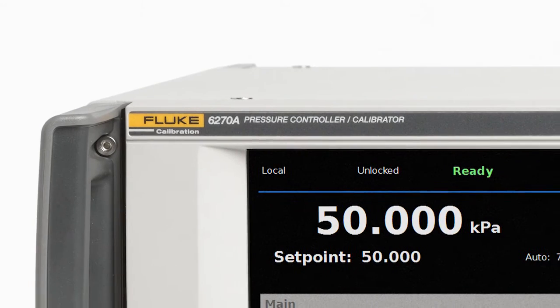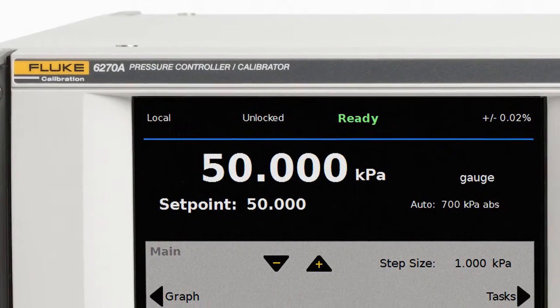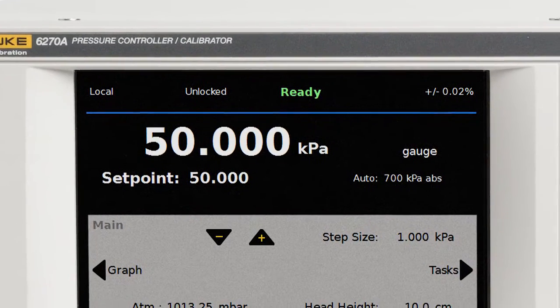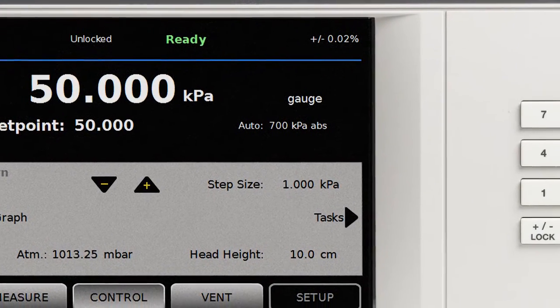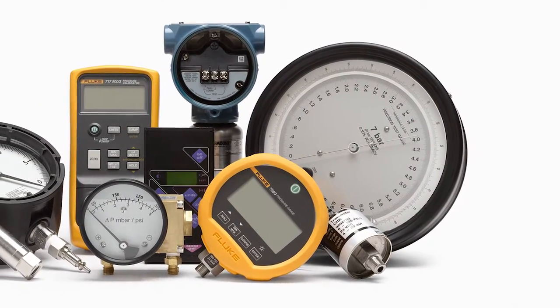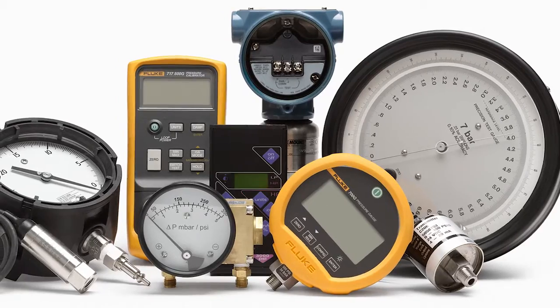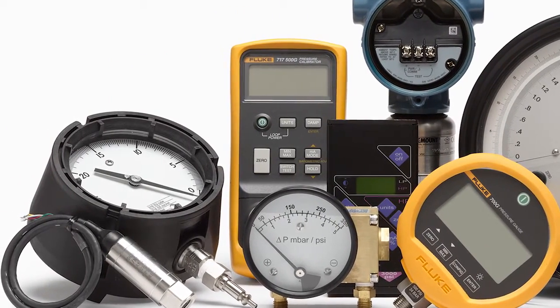The Fluke Calibration 6270A Pressure Controller Calibrator is a robust, reliable solution that lets you dramatically simplify the task of pneumatic pressure calibration. You can configure this highly flexible instrument to meet your specific workload and budget and expand it as needed to cover a very broad workload.